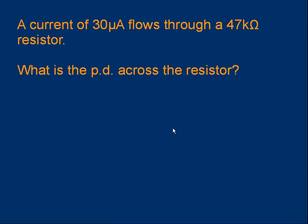Try another one. A current of 30 microamps flows through a 47 kiloohm resistor. We want to know, what is the voltage, what's the pd across the resistor? If you pause the video, you can try this one for yourself. Okay, well I hope you got an answer rather like this. V equals IR. We're trying to find V. So I, the current, is 30 microamps, 30 times 10 to the minus 6 amps. The resistance is 47 kiloohms, 47,000, 10 to the 3 ohms. And that gives us 1.4 volts as the potential difference.